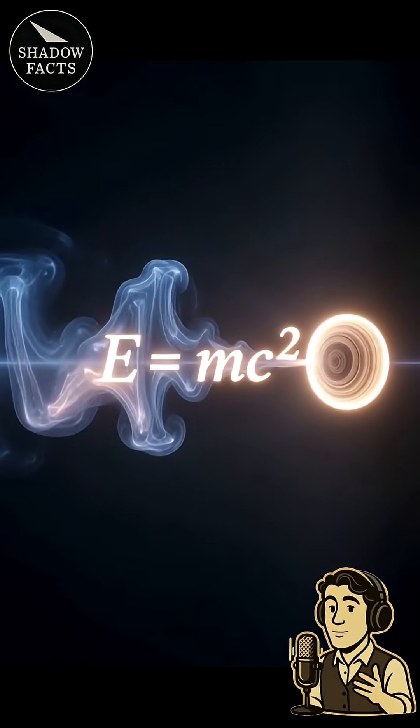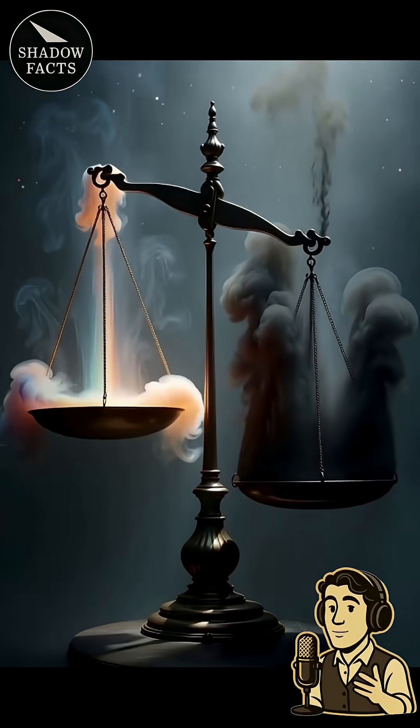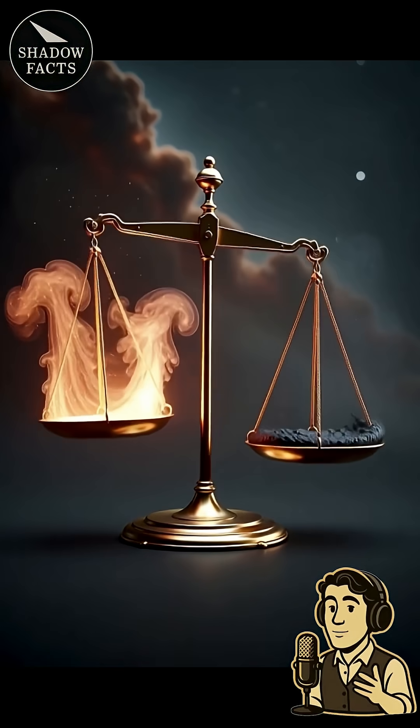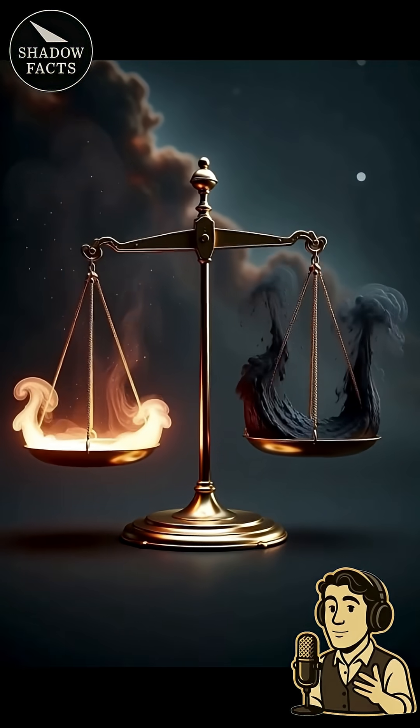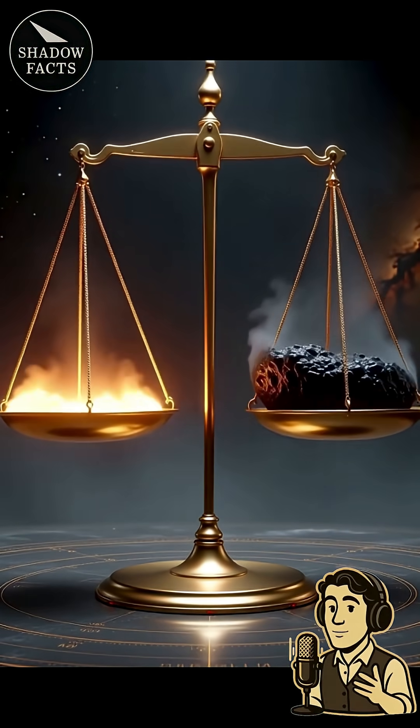Some physicists believe that the positive energy of all matter is perfectly balanced by the negative energy of gravity. So the total energy of the universe might actually be zero. It's like a cosmic balance sheet, where every debit is matched by a credit. The universe didn't need anyone to build it.